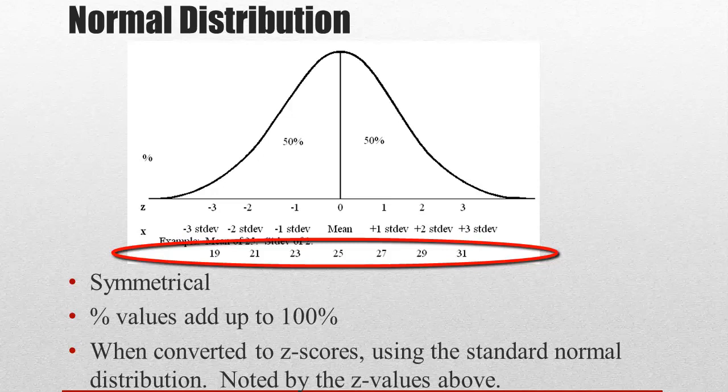Now that doesn't mean a student can't earn 34, or they can't earn 11, it just means that they're not going to be in that middle normal amount. They're going to be your outliers then.